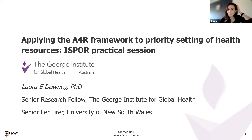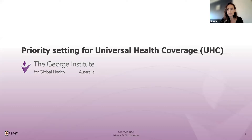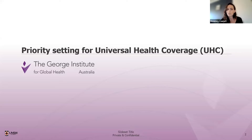My name is Laura, I'm a senior research fellow in health system science at the George Institute as well as at Imperial College in London. I've recently moved to Australia from the UK, so the majority of my experience in priority setting has been within a UK National Health Service context. I've also done a lot of work with developing countries, particularly in India, where I worked closely with the government to establish a novel system for health technology assessment, now called HTA India, to improve the efficiency and value for money of healthcare decision making.